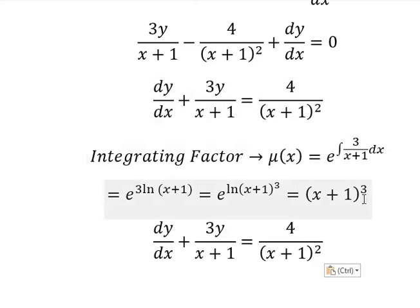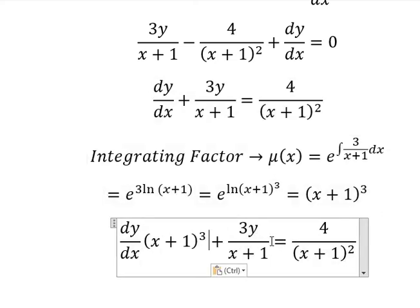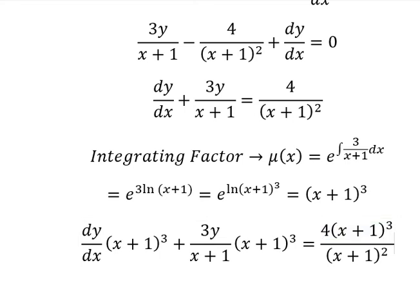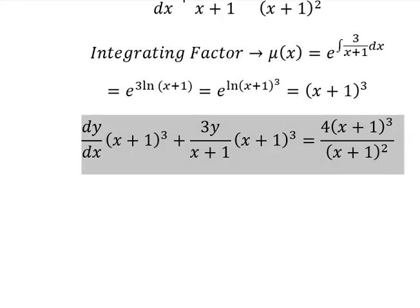That means we multiply both sides by this one. Next we need to simplify.